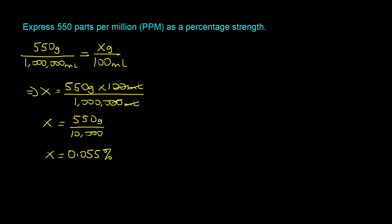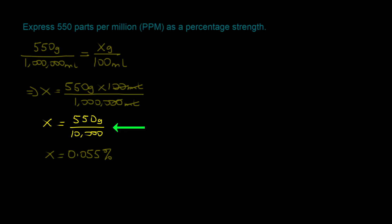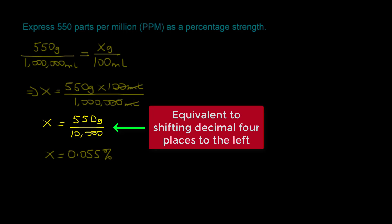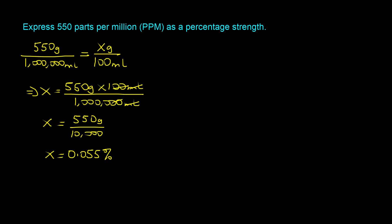If you look at what happened, we took 550 and divided by 10,000, which is equivalent to moving the decimal four places to the left. So the expeditious way is to take the parts per million — 550 — and move the decimal four places to the left: 1, 2, 3, 4. We end up with 0.055%.